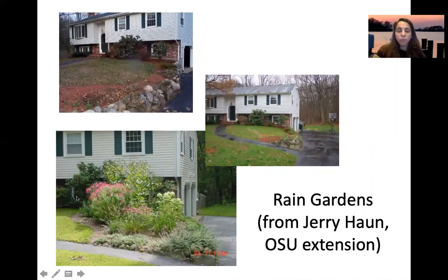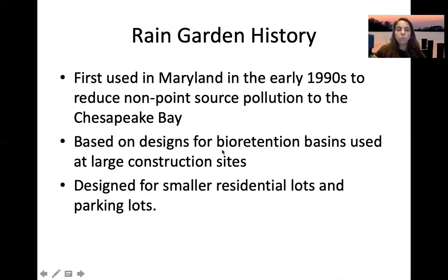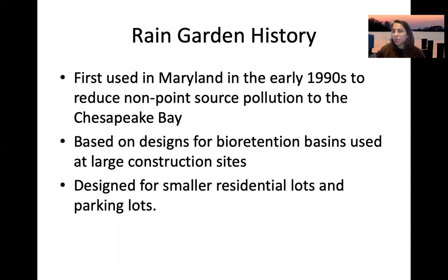Here are some residential rain garden before-and-after pictures. You can see downspouts being redirected toward a rain garden. Maryland was one of the first to use rain gardens, in the early 1990s, to reduce non-point source pollution to the Chesapeake Bay. The design was based on bioretention basins used at large construction sites, but with native plants added for long-term benefit.